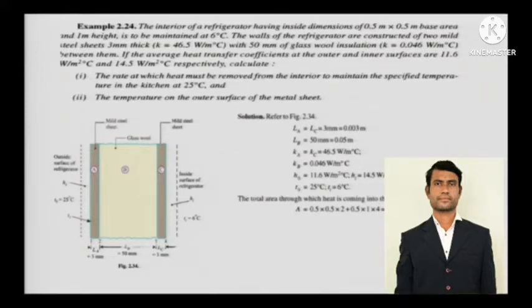Glass wool insulation has k equals 0.046 watts per meter degree Celsius. The average heat transfer coefficients at the outer and inner surfaces are 11.6 watts per meter square degree Celsius and 14.5 watts per meter square degree Celsius respectively. Calculate the rate at which heat must be removed from the interior to maintain the specified temperature with the kitchen at 25 degrees Celsius, and the temperature on the outer surface of the metal sheet.